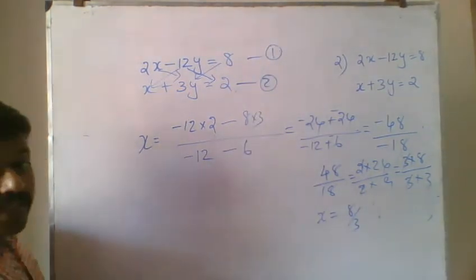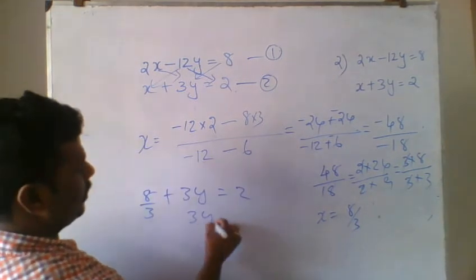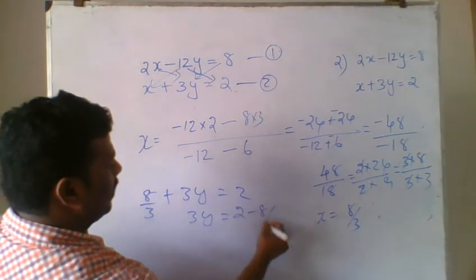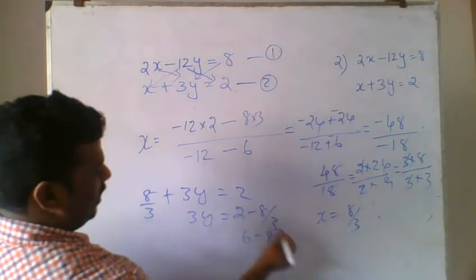Let's say 8 by 3, 8 by 3 plus 3y is equal to 2. 3y is equal to 2 minus 8 by 3, then 6 minus 8, 6 minus 8 by 3.